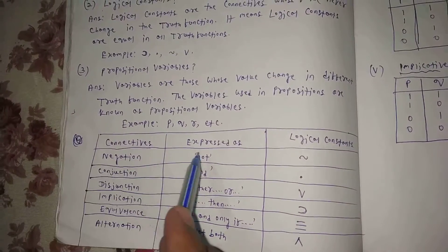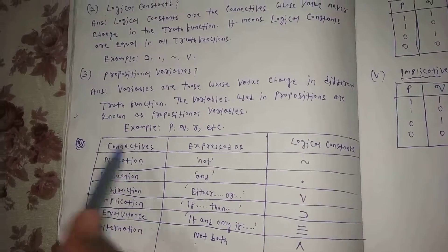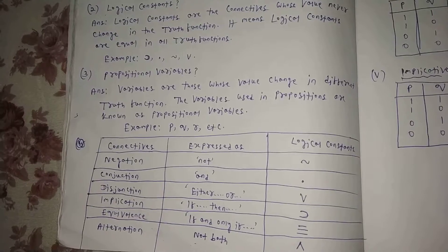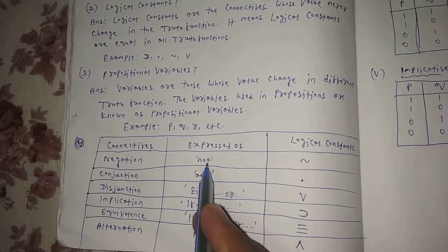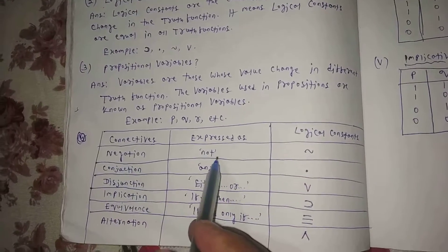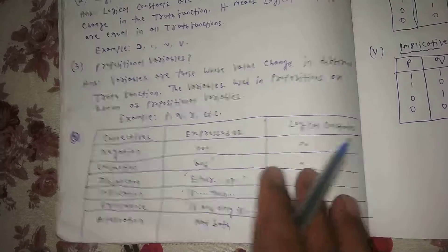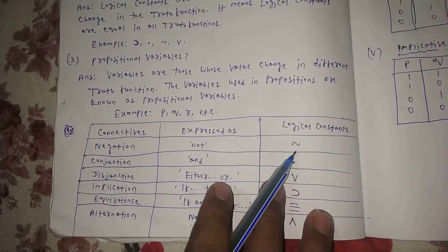Connectives. First connective is negation, expressed as 'not.' Negation means 'it is not.' It is a logical constant.